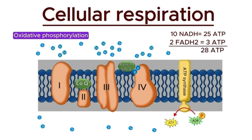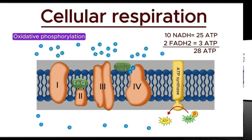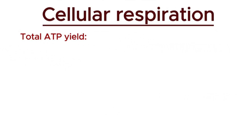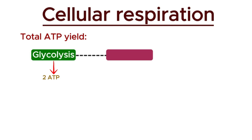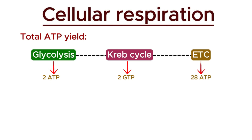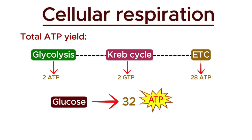Now that we've covered all the ATP production from one glucose molecule, let's summarize the total ATP yield. Glycolysis produces two ATP molecules, the Krebs cycle produces two GTP molecules equivalent to two ATP, and the electron transport chain produces 28 ATP molecules. So in total, one glucose molecule can produce approximately 32 ATP molecules. This comprehensive ATP yield reflects the efficiency of cellular respiration in converting glucose into usable energy.